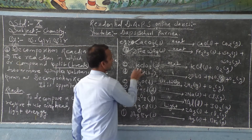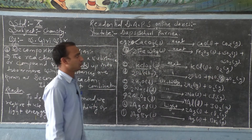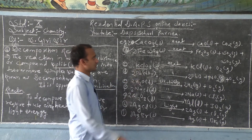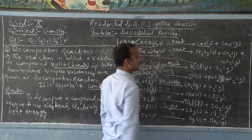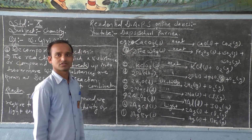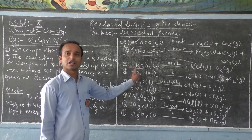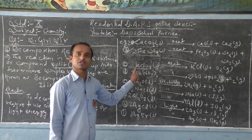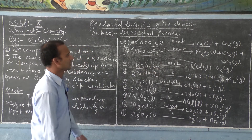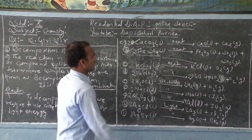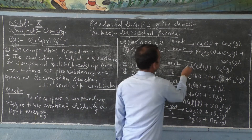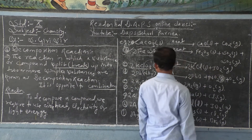Now, when you take potassium chlorate (KClO3) and heat this substance, it breaks into its constituent particles: potassium chloride and oxygen. KClO3 breaks into KCl plus O2. You may balance this equation by putting 2 in front of KClO3 and 3 in front of O2.